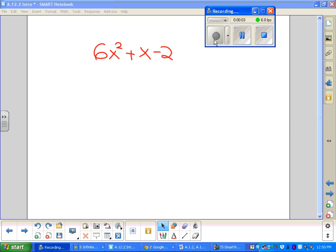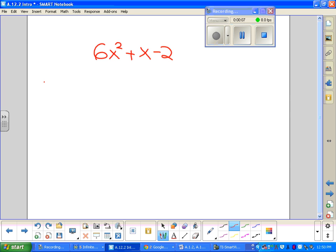Here's example number 12, being asked to factor 6x squared plus x minus 2. Step number 1 is multiplying your a and your c. a is 6 and c is negative 2, so negative 12 is our value for number 1.